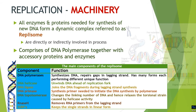Without primase, the DNA polymerase cannot synthesize DNA on the template strand. Topoisomerases change the linking number and relax the torsional strain at the replication fork caused by the unwinding of DNA. RNase H removes the RNA primers synthesized during the initiation of replication. Finally, single-strand binding proteins keep the single strand in a linear form. All of these are constituents of the replisome, and primary among all of them are the polymerases.